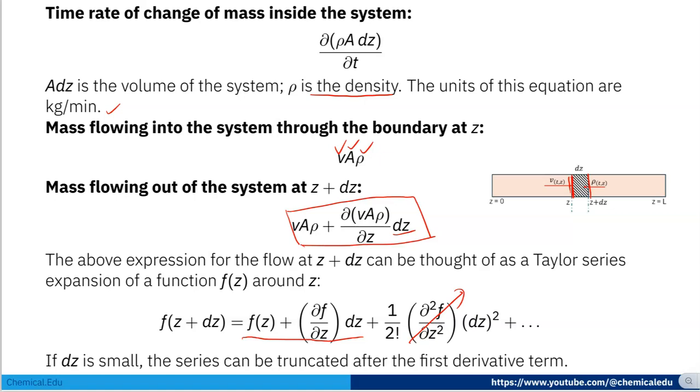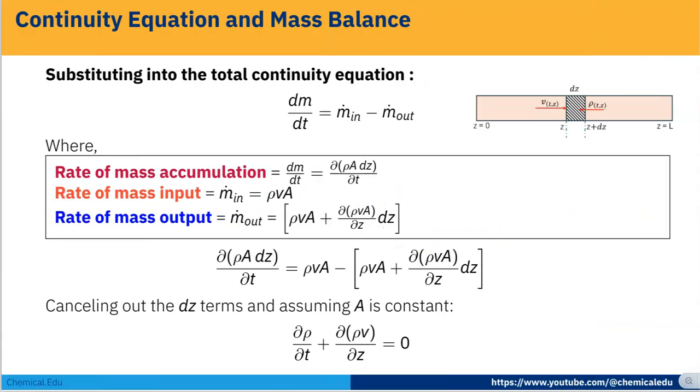Now we substitute into the total continuity equation. We have rate of accumulation ∂(ρAdz)/∂t, rate of mass input ρvA, and rate of mass output ρvA + ∂(ρvA)/∂z·dz. Plugging these values in: ∂(ρAdz)/∂t = ρvA - [ρvA + ∂(ρvA)/∂z·dz]. The ρvA terms cancel out.